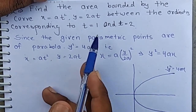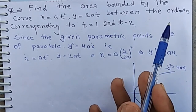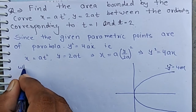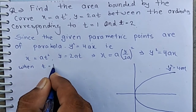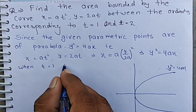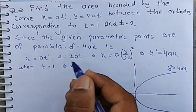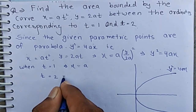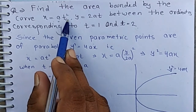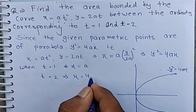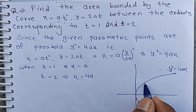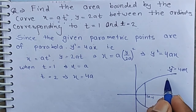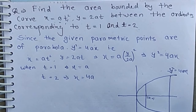We have to find the area between the ordinates corresponding to t equal 1 and t equal 2. When t equal 1, then x equal a into 1 squared, means x equal a. When t equal 2, then x equal a into 2 squared, means x equal 4a. So we have to find the area between x equal a and x equal 4a.